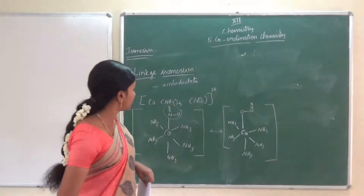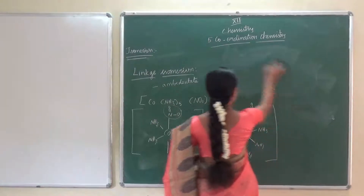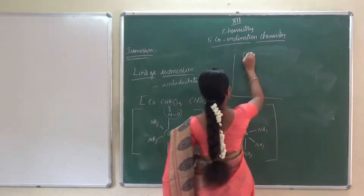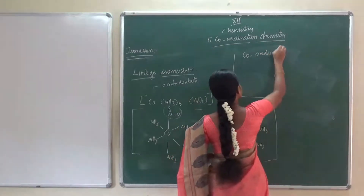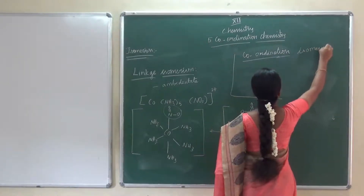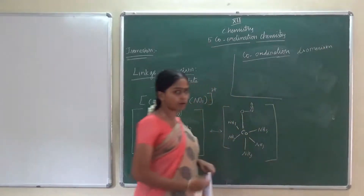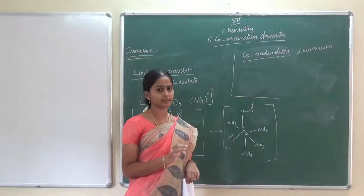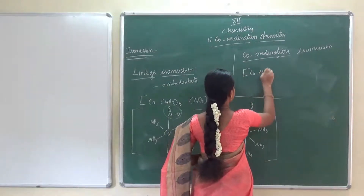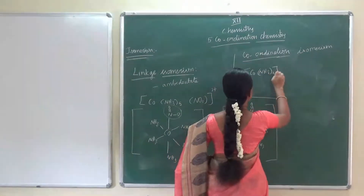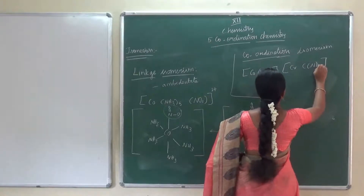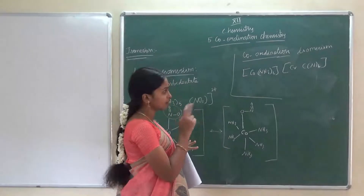Next is coordination isomerism. In coordination isomerism, both the cation and the anion must be complex ions. Only in such compounds can coordination isomerism be exhibited. For example, consider chromium hexaammine cobalt hexacyanide — [Cr(NH₃)₆][Co(CN)₆]. When writing coordination isomers, the pair must be written together as one example, not as two separate examples.